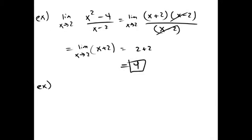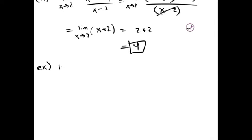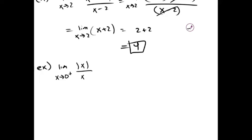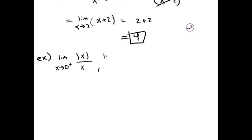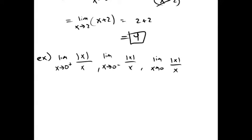Sometimes we'll get a piecewise function. So we'll find the limit of absolute value of x over x. Both the one-handed limits and the two-handed limits. So, first we've got to recognize that this piecewise function, absolute value of x over x,